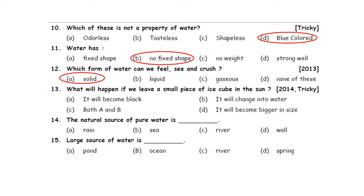Question thirteen: What will happen if we leave a small piece of ice cube in the sun? If we leave a small piece of ice cube in the sun, the heat of the sun will convert the ice cube — the solid form of water — into water, the liquid form. So option B is the correct answer.